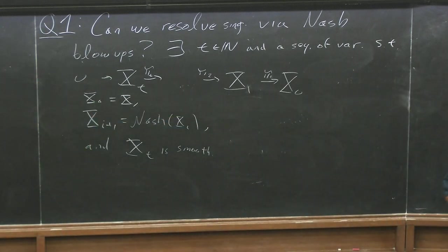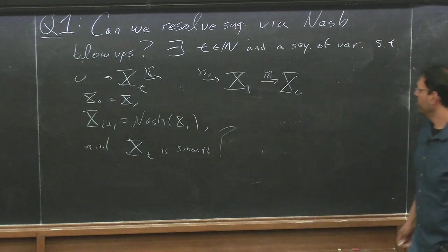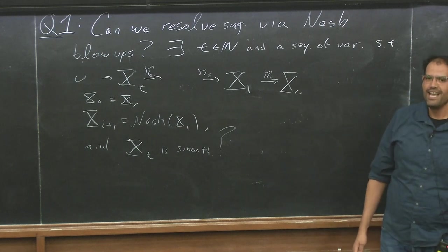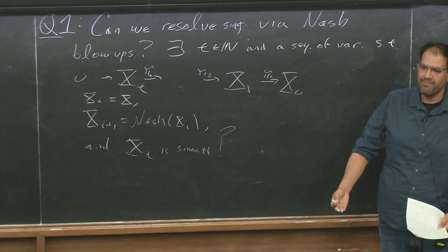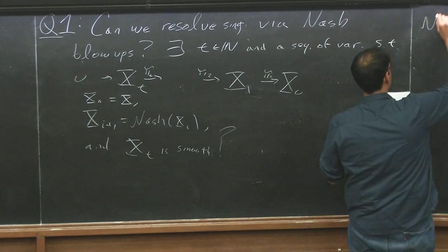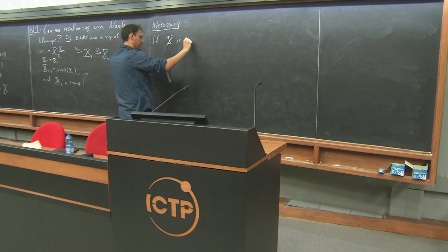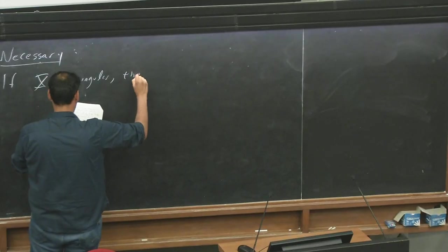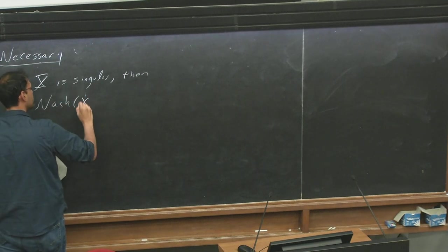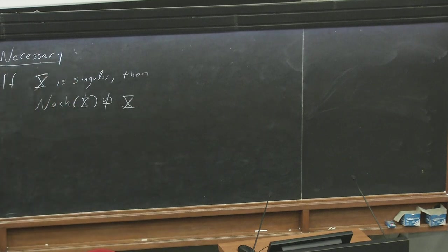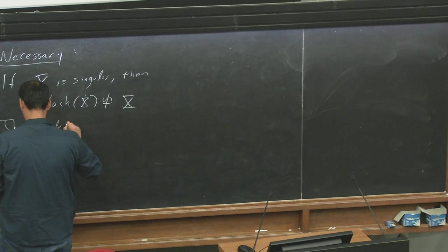And for this question to be meaningful, we expect that Nash Blow-up improves the singularities. So the first thing that we need is it changes the variety, because if we just get the same, then nothing's going to happen. For this, it's necessary that if x is singular, then the Nash Blow-up of x has to be different from x.